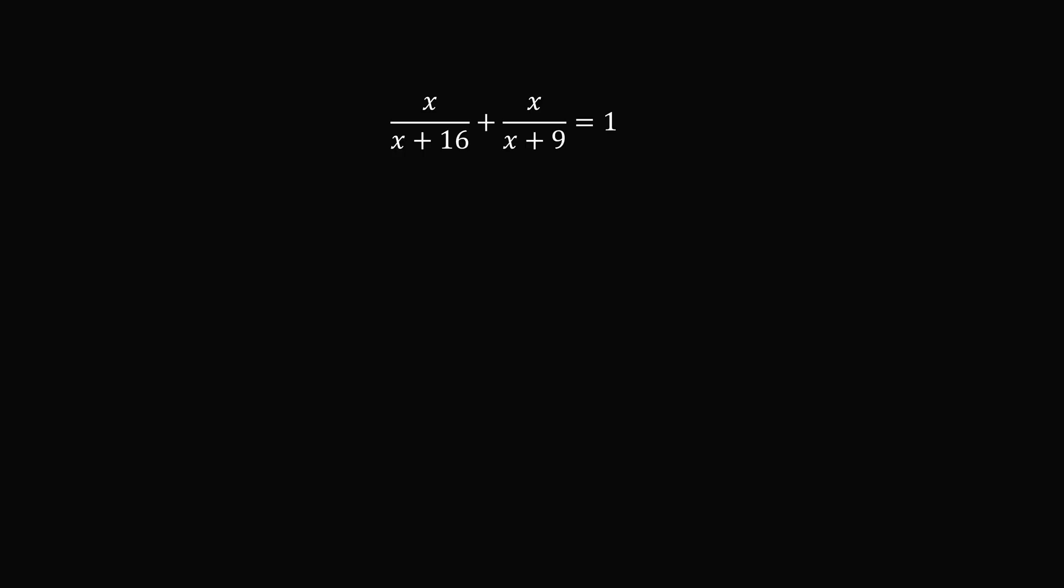Since x is a positive number, x plus 16 and x plus nine are not equal to zero. So we can get rid of the denominators in this equation by multiplying both sides by the factor x plus 16, multiplied by the factor x plus nine. The right-hand side simplifies to be x plus 16, multiplied by x plus nine.